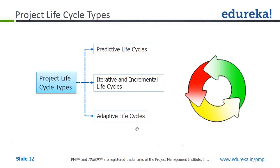The third one is adaptive life cycle — this is nothing but your agile method, also known as change-driven. Agile is a name known to everyone. It is similar to iterative and incremental life cycle, except the iterations are very rapid, around two to four weeks. In iterative and incremental life cycle, the iterations could be two to four months.